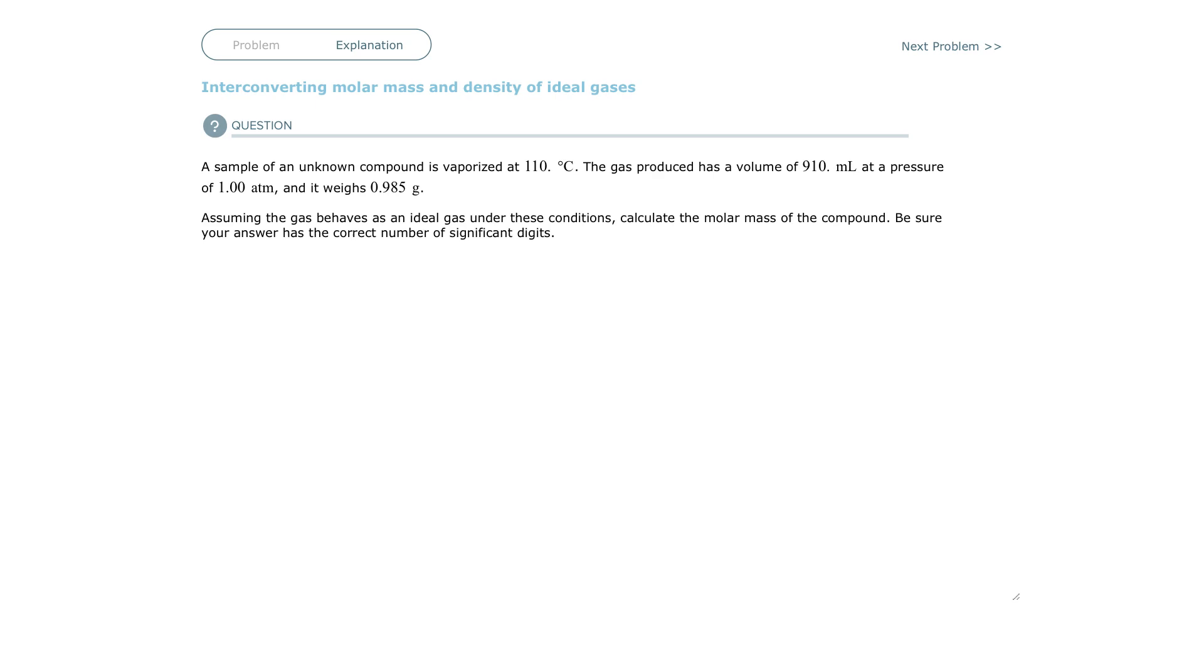A sample of an unknown compound is vaporized at 110 Celsius. Let's go ahead and put that in Kelvin since we know everything has to be in Kelvin. So 110 plus 273.15 is going to be 383.15 Kelvin.